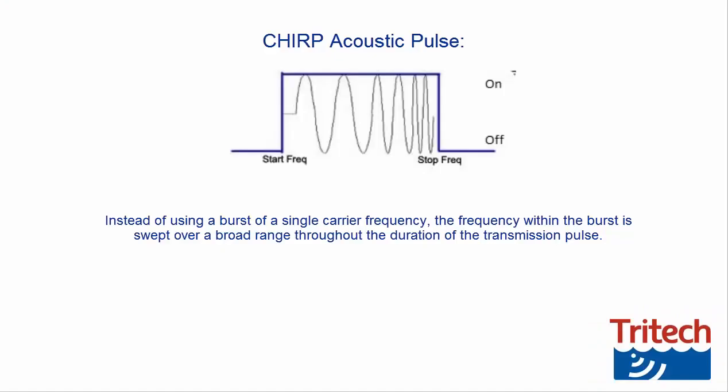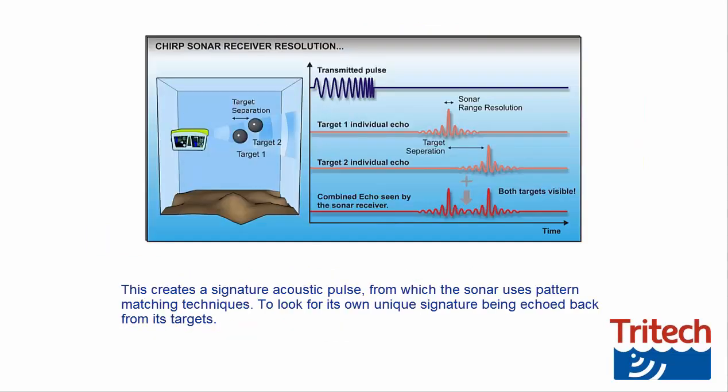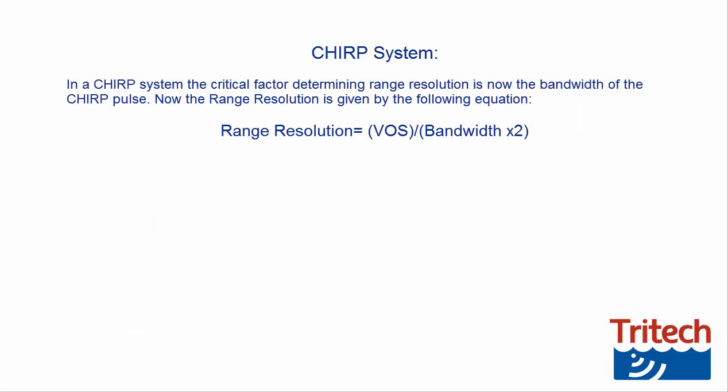Instead of using a burst of a single carrier frequency, the frequency within the burst is swept over a broad range throughout the duration of the transmission pulse. For the CHIRP acoustic technique, the following occurs during the transmission and receiving of acoustic data. Step 1: The electronically generated multiple frequency CHIRP signal is produced. For Steps 2 to 6, the principle of operation is the same as the monotonic sonar. Step 7: A sharp spike is produced on return of an acoustic pulse. This creates a signature acoustic pulse, from which the sonar uses pattern matching techniques to look for its own unique signature being echoed back from its targets. In the CHIRP system, the critical factor determining range resolution is now the bandwidth of the CHIRP pulse.